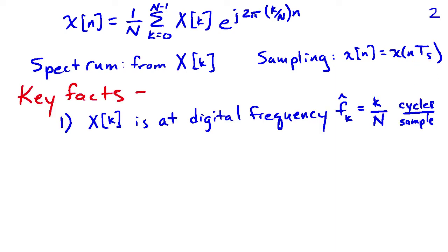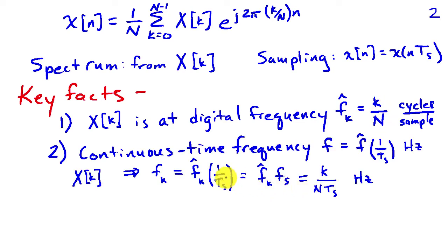There are a couple of key facts for finding the relationship between the index of the DFT coefficient and the frequency in the spectrum. First, x of k is associated with a complex sinusoid whose frequency is k over N cycles per sample. So x of k occurs at a digital frequency f-hat-k equal to k over N. And continuous time frequency f is f-hat times 1 over t-sub-s, where t-sub-s is the sampling interval, measured in units of hertz.